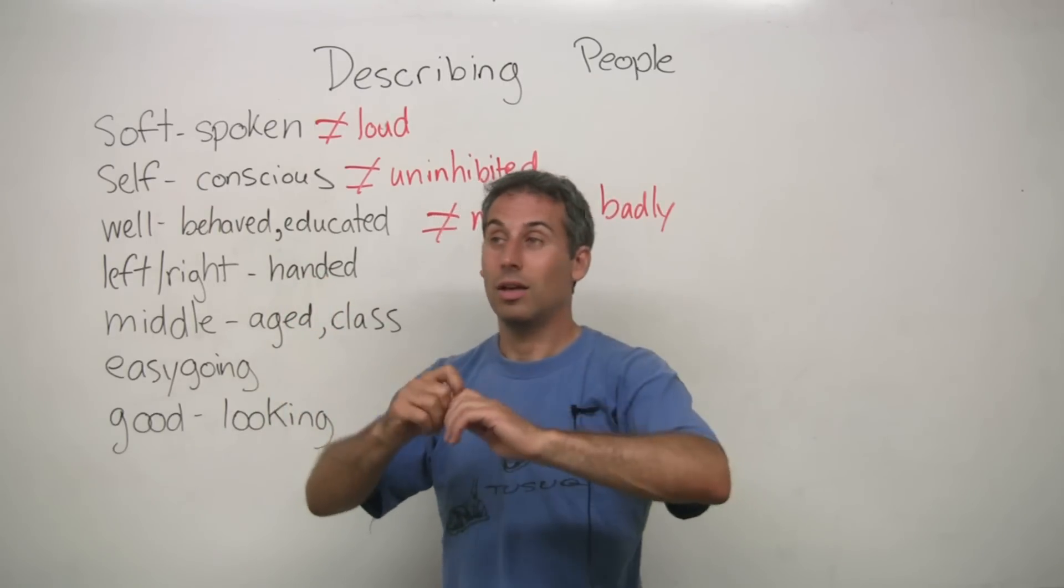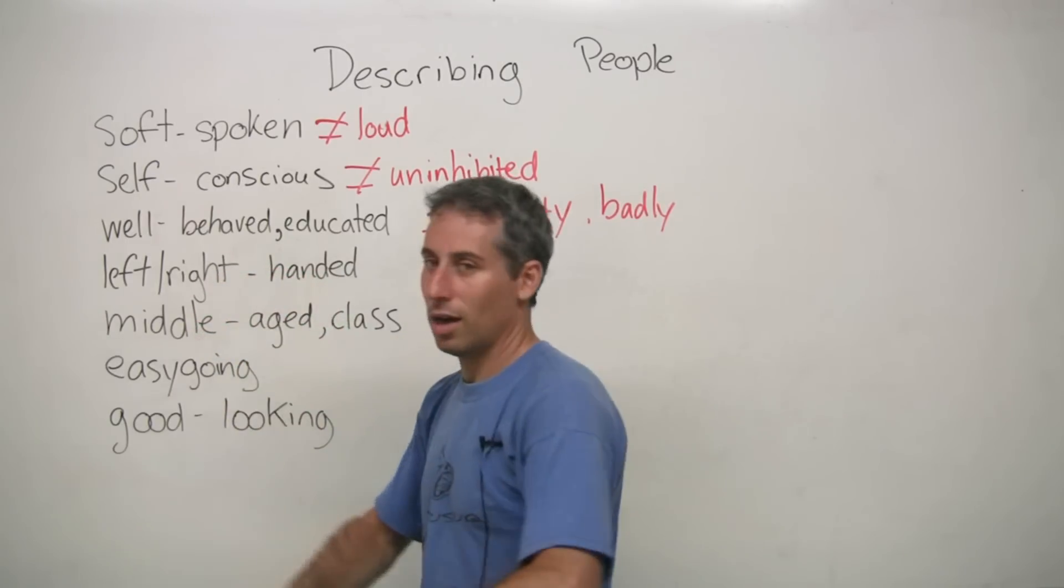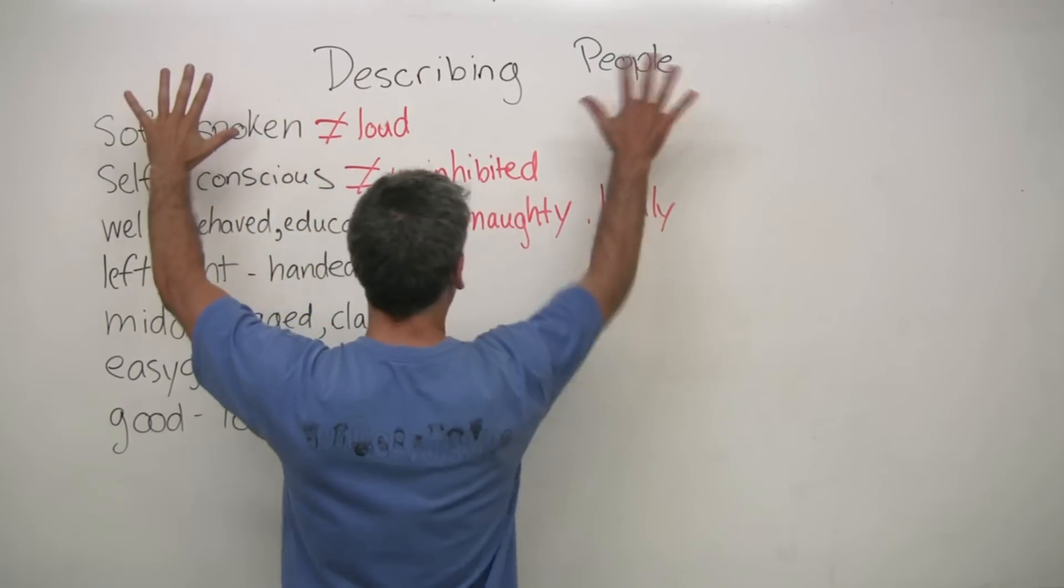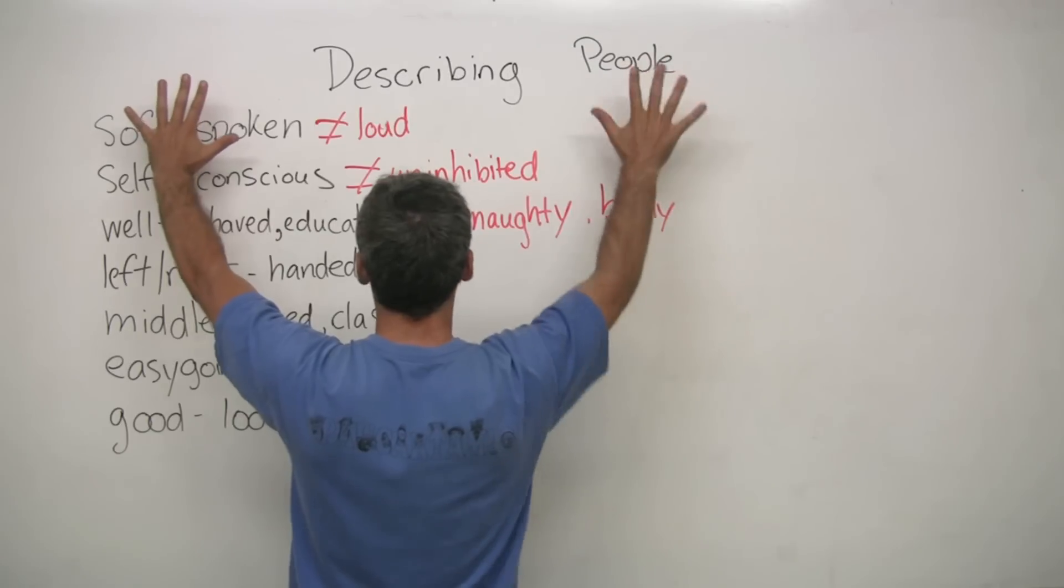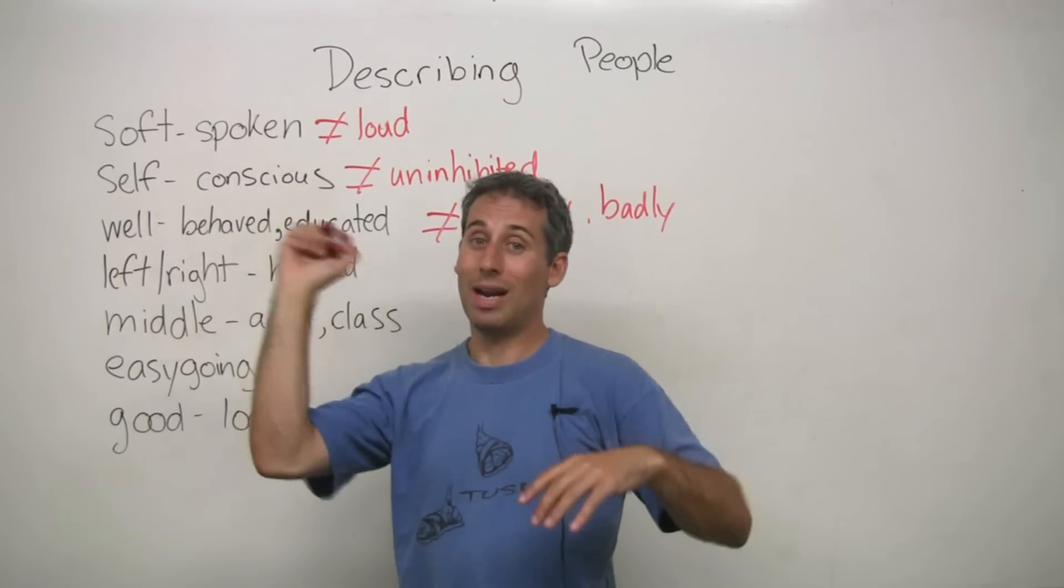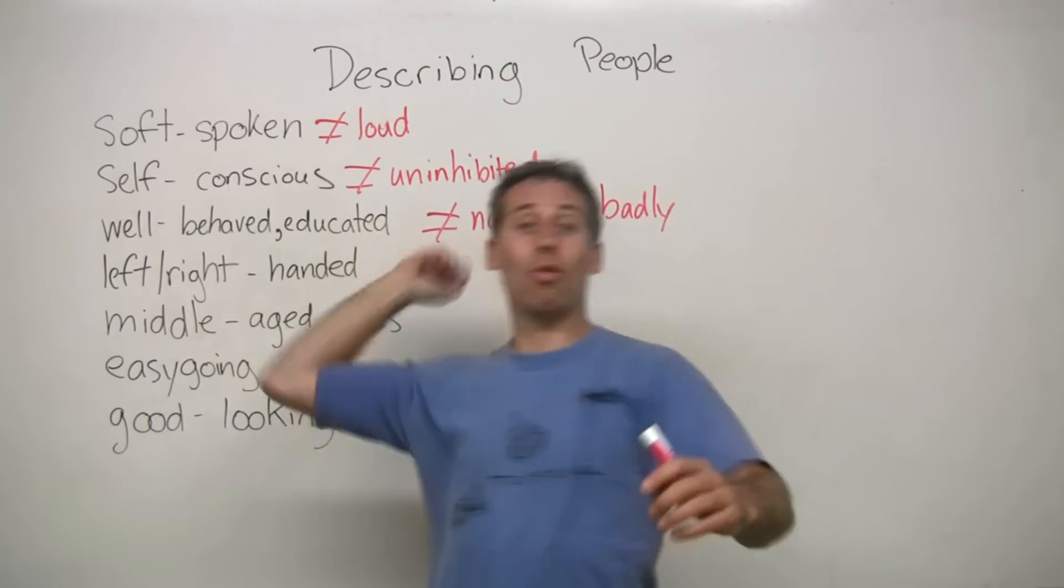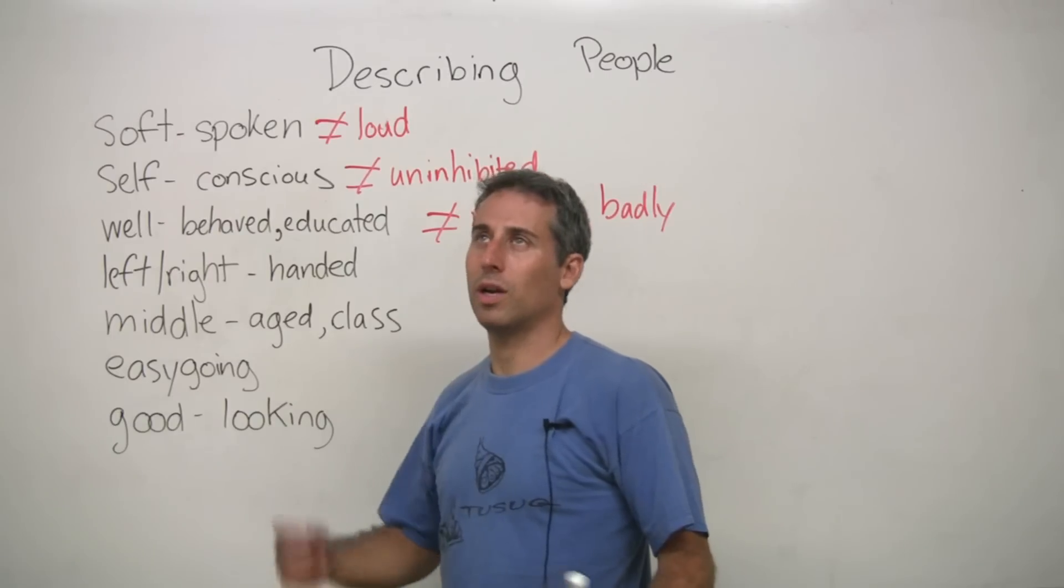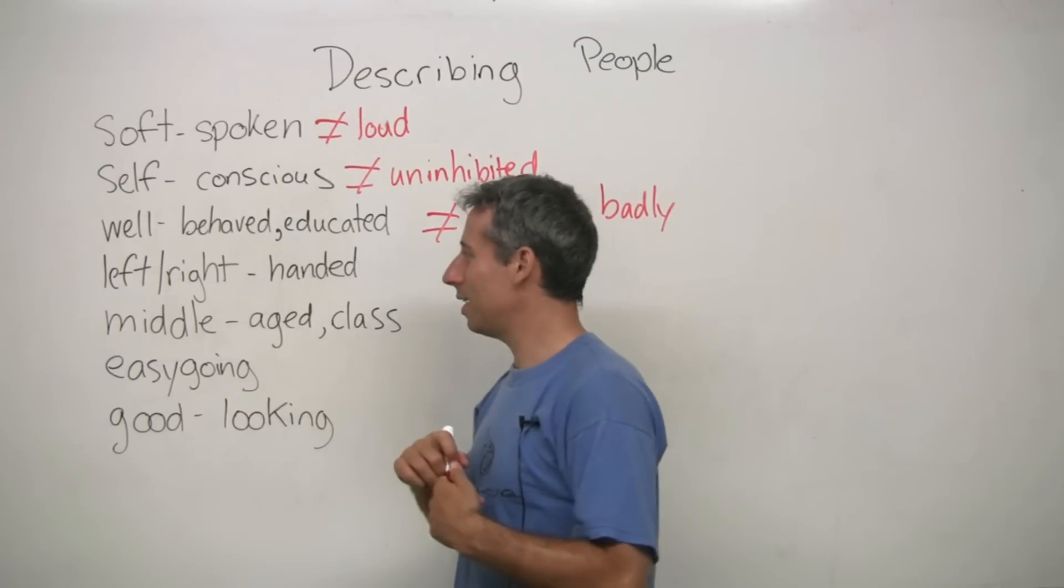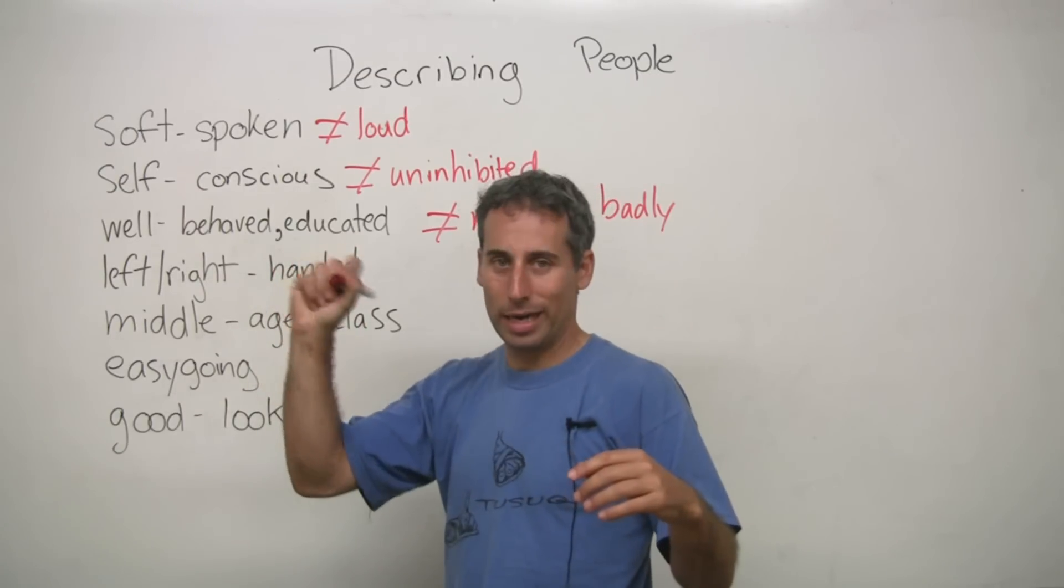Left or right-handed. Okay, so just to make sure that you know which one is your left and which one is your right. This is my left, and this is my right. Okay, this is my left, and this is my right. Well, myself, I'm right-handed. So I write with my right. I throw with my right. What else do I do with my right? That's about it. But yeah, so it's more common to see people that are right-handed.